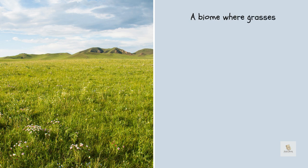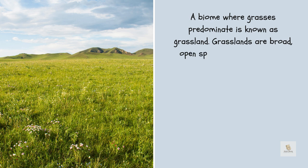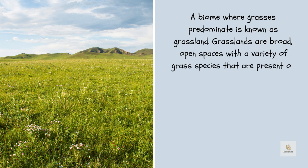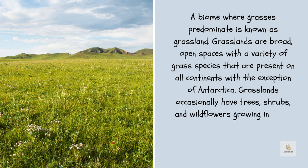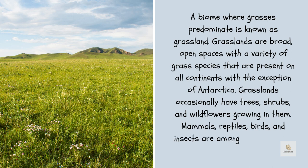A biome where grasses predominate is known as grassland. Grasslands are broad, open spaces with a variety of grass species that are present on all continents with the exception of Antarctica. Grasslands occasionally have trees, shrubs, and wildflowers growing in them. Mammals, reptiles, birds, and insects are among the creatures that do well in grasslands.